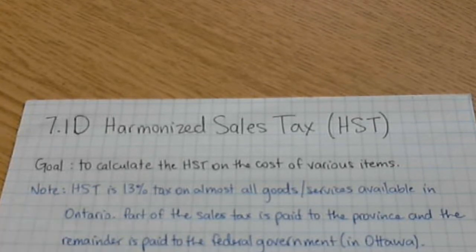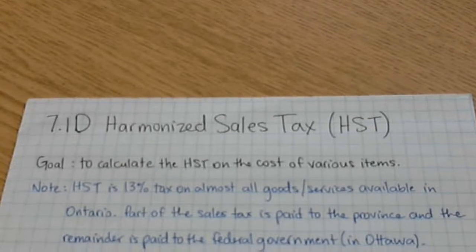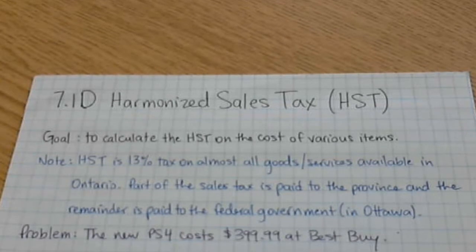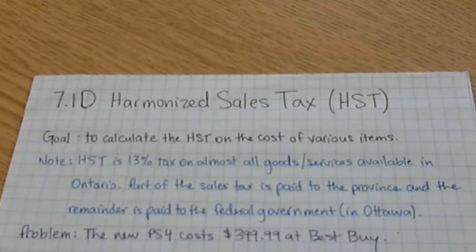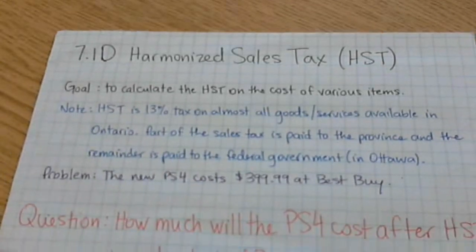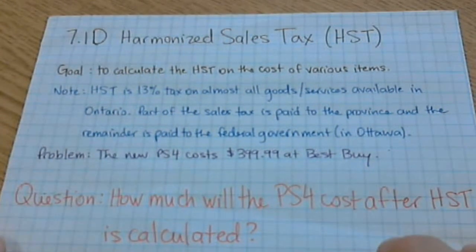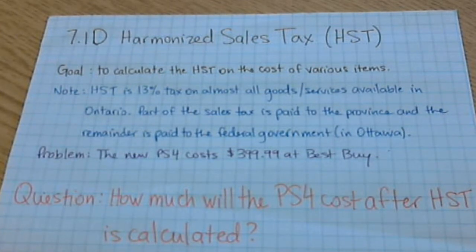So you have to pay that on stuff that you want and are going to buy. The new PS4, which just came out, actually costs $399.99 at Best Buy — I checked the website today. That's how much it's going to cost before tax. So my question is, how much will the PS4 cost after HST is calculated?